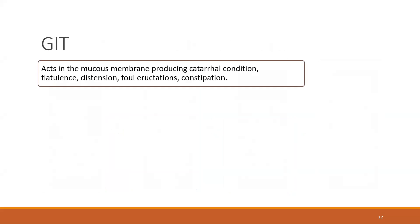Coming to the GIT: the mucous membrane produces a catarrhal condition, increasing secretion in any mucous membranes. This leads to flatulence, distension, foul eructation, and constipation — as you will remember especially in cases of carbo-veg. Digestion is extremely dysfunctional and very sluggish, leading to putrefaction of the food in the stomach.